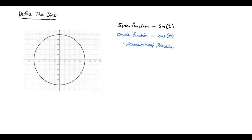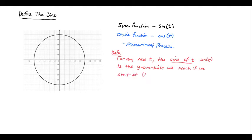So what is that measurement process? What I'm going to do is I'm going to explain how we define the sine of t. So for any real number t, the sine of t, which is written sin of t, is the y coordinate we reach if we start at the point (1, 0) on the unit circle. There's a unit circle over to the left there and travel t units counterclockwise along the circle or along the circle's circumference.